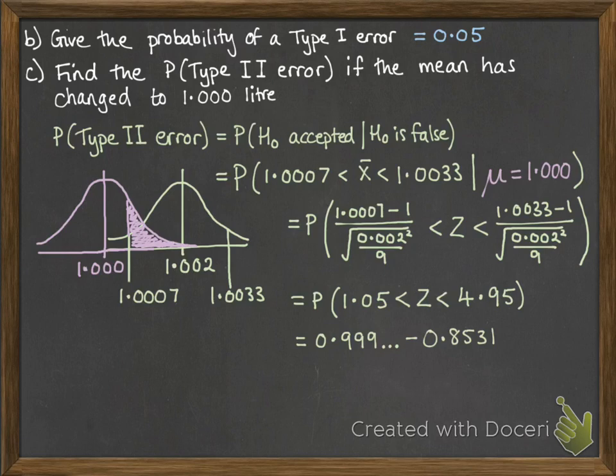And you can read those off the tables. Now, I didn't pick particularly good numbers here because 4.95 isn't on your normal distribution table. You would be given a number you could actually look up. But we can just assume that that's 0.999 a lot for a long time. And then take off the 0.8531 from the phi of 1.05.